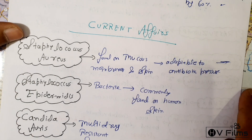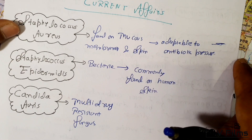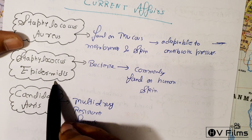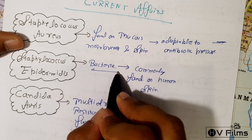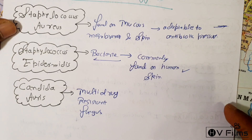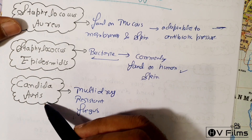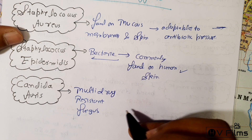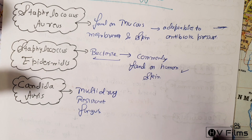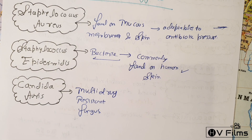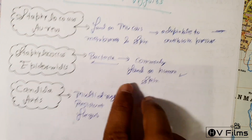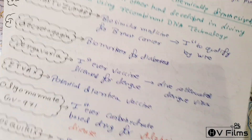Staphylococcus epidermidis is a bacterium commonly found on human skin. Candida auris is a multi-drug resistant fungus that can cause many different types of infections such as bloodstream infections, wound infections, and ear infections.